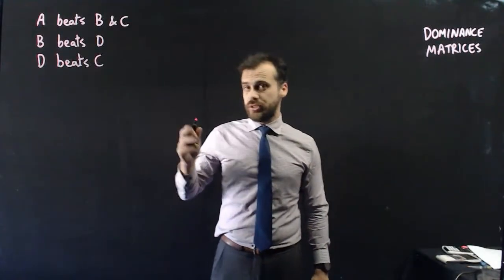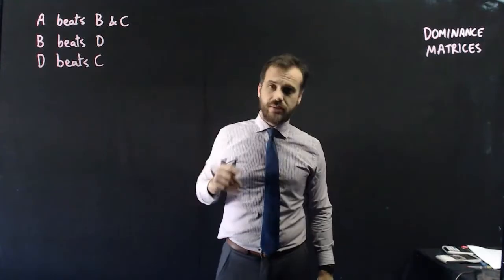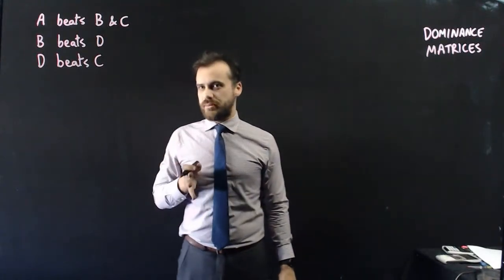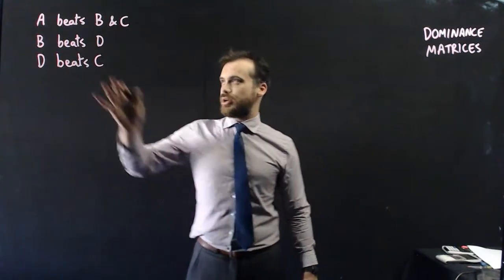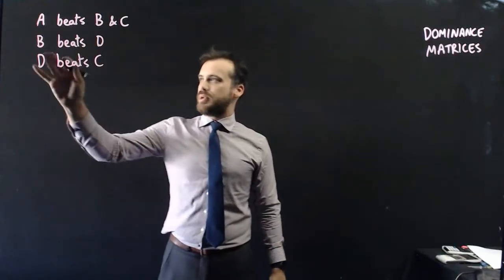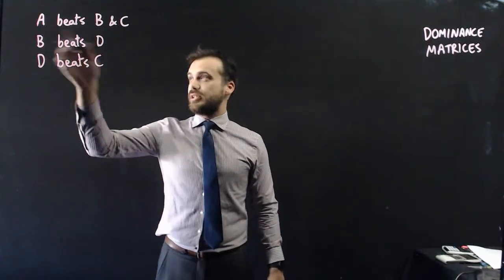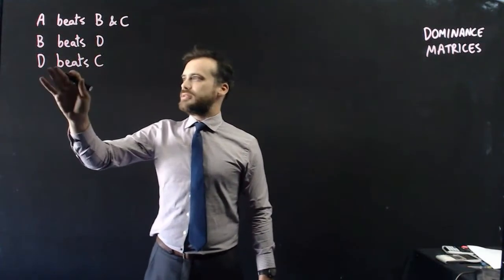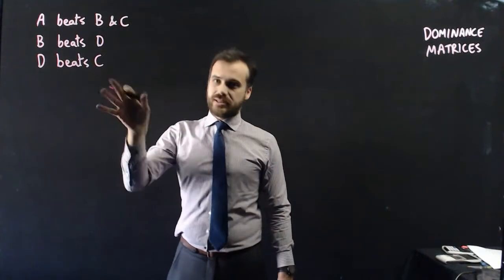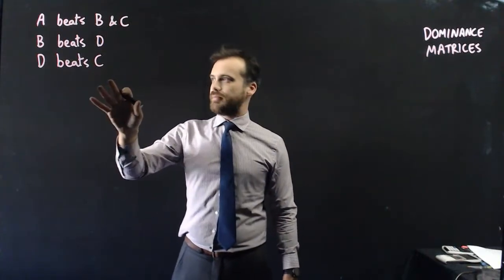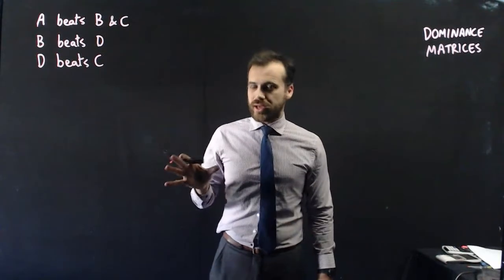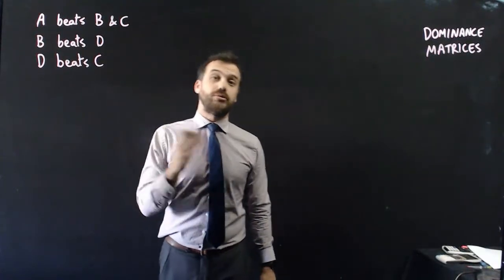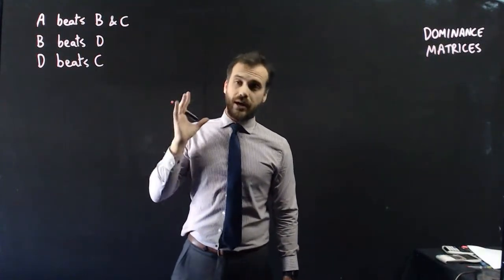Here's a very simple competition: four teams, A, B, C, and D, and they only got to play two games each. A beat B and C. B lost to A but beat D. And D beat C. Now that we've got that, we can draw this up using what's called a dominance network.